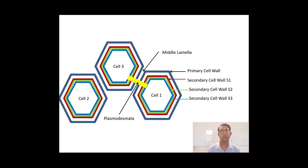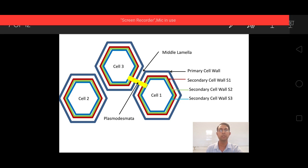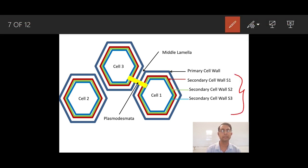Here you can observe the middle lamella between two cells and the plasmodesmata as tunnels connecting them. There is the primary cell wall on the exterior of the cell. There is also a secondary cell wall, which consists of three layers: S1 (the outermost), S2, and S3. These three layers together make up the secondary cell wall, and they are produced after the primary cell wall.